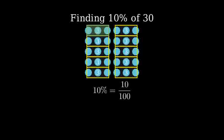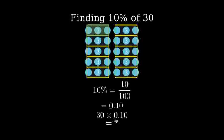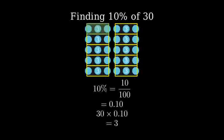10% can be written as 10 over 100, which equals 0.10 in decimal form. To find 10% of 30, we multiply 30 by 0.10. 30 times 0.10 equals 3.